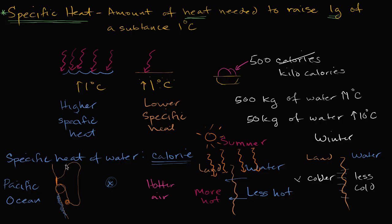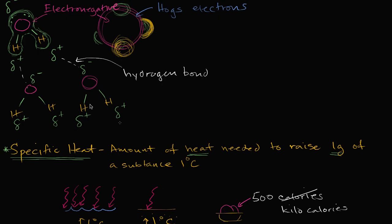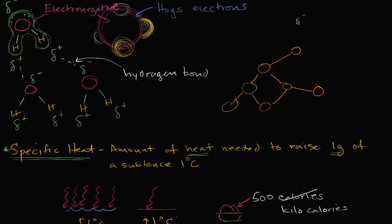Why does water have such a high specific heat? That goes back to the hydrogen bond. For a solid substance, as it gets heat energy, that energy just increases the kinetic energy of the particles — it makes them vibrate more in place. And that's what temperature is: it's really average kinetic energy. When you touch something hot, it's because those things are vibrating super fast.